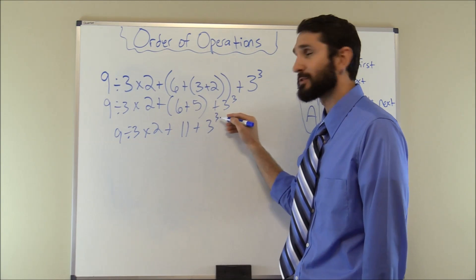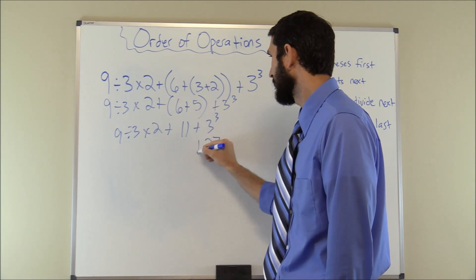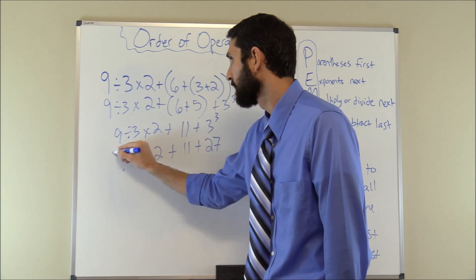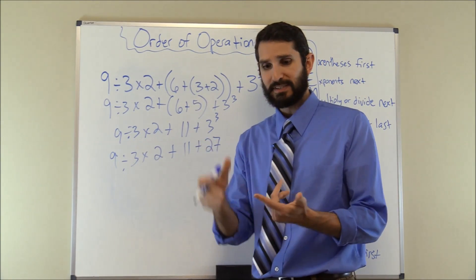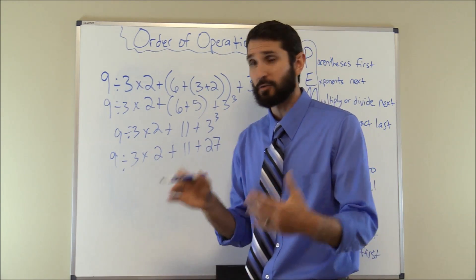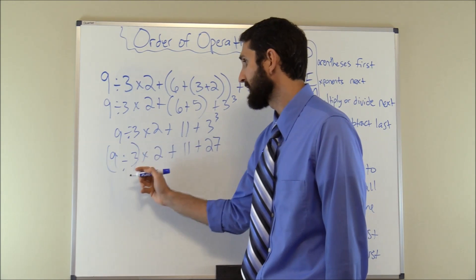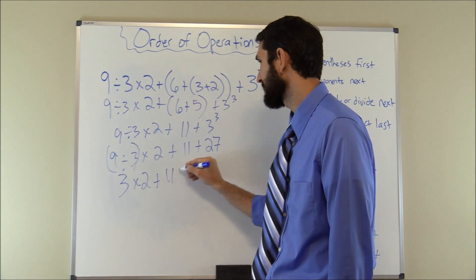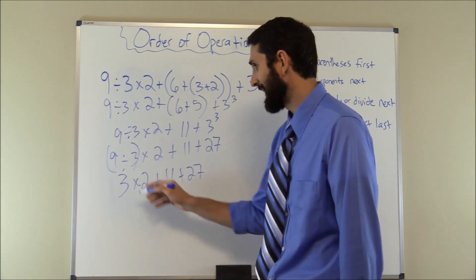We solve 3³ = 3 × 3 × 3 = 27. Our problem is now 9 ÷ 3 × 2 + 11 + 27. Next we handle multiplication and division, working left to right. 9 ÷ 3 = 3. The problem becomes 3 × 2 + 11 + 27.